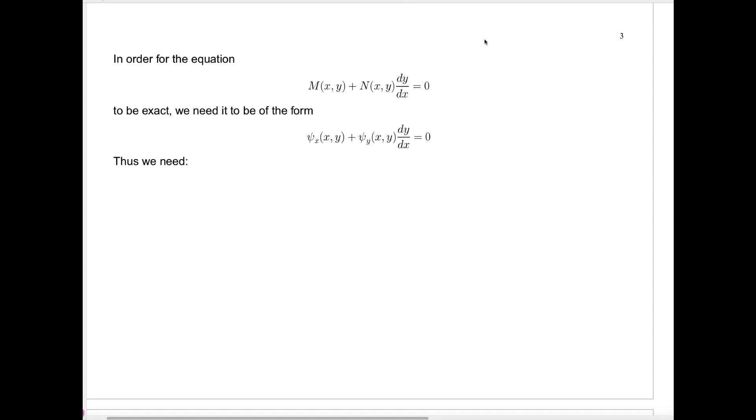So what we've already said is in order for this equation, first order differential equation in this standard form, to be exact, we need it to be in the form c_x + c_y dy/dx. So the M has to be c_x and the N has to be c_y. So I'll remind you what we needed: we need a function c of two variables, x and y, with c_x = M and c_y = N. So now we'll address the question, how can we tell if there exists such a function c? That's the first question. And the second question is, how can we find such a thing if it exists?